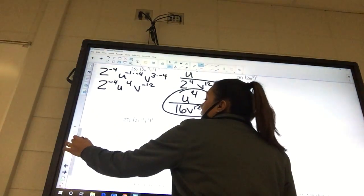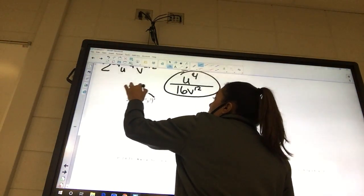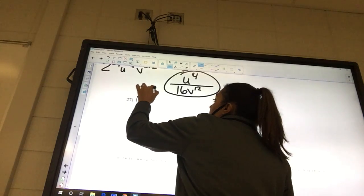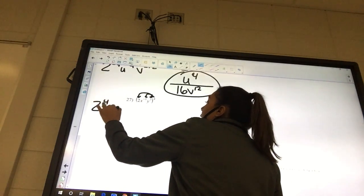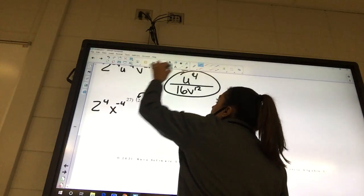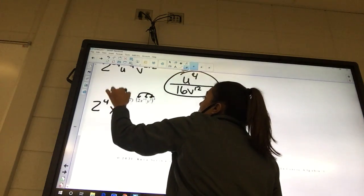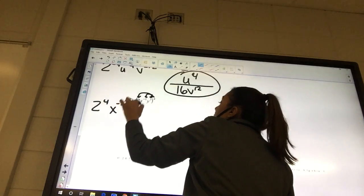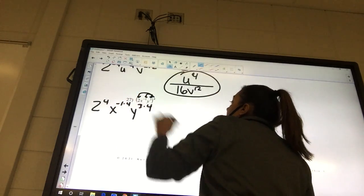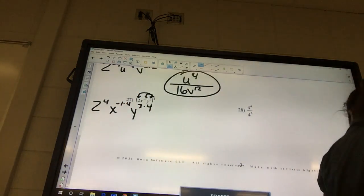Alright, 27. We're going to distribute that 4 to each piece. So it's going to be 2 to the 4th, x to the negative 1 times 4, y to the 3 times 4. Okay, take a second and try to simplify that.